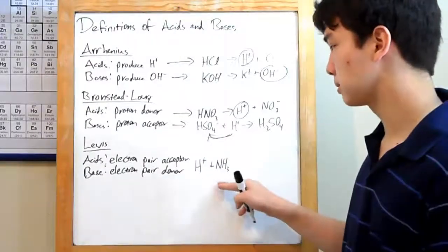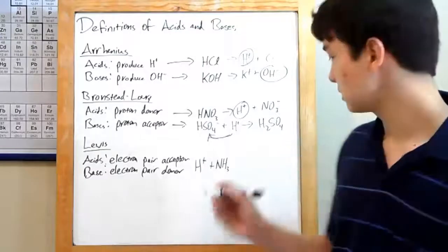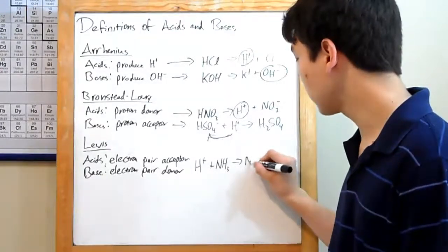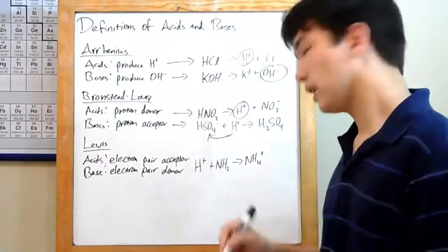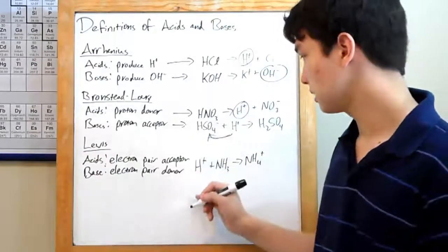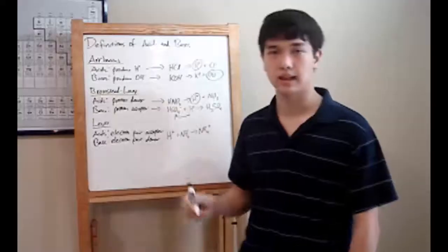Over here, we have H plus plus NH3. What happens is the two will react to produce NH4 plus. H plus is your Lewis acid, and NH3 is your Lewis base. Why?